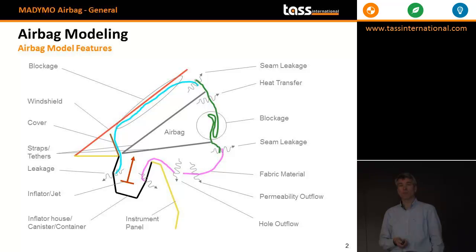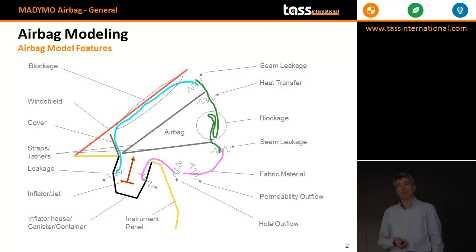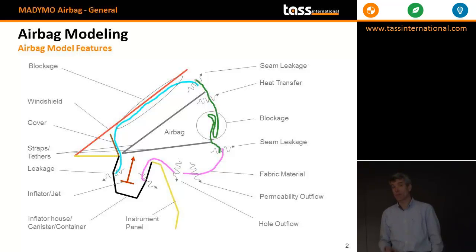Permeability outflow — basically already addressed at the blockage. It can be high, it can be low. And then hole outflow: not all airbags have holes, but most of them do. Once the dummy makes contact with the airbag, the airbag is compressed and you get outflow. This will be due to permeability, but holes can have a contribution as well.